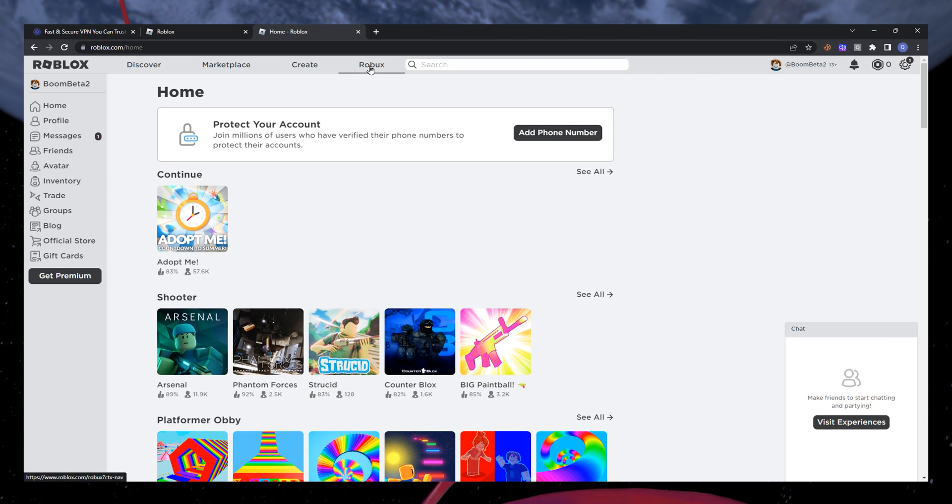After logging in, click the Roblox icon and select Buy Roblox. You will see the Roblox packages and the price of the currency of your choice will be displayed up front.